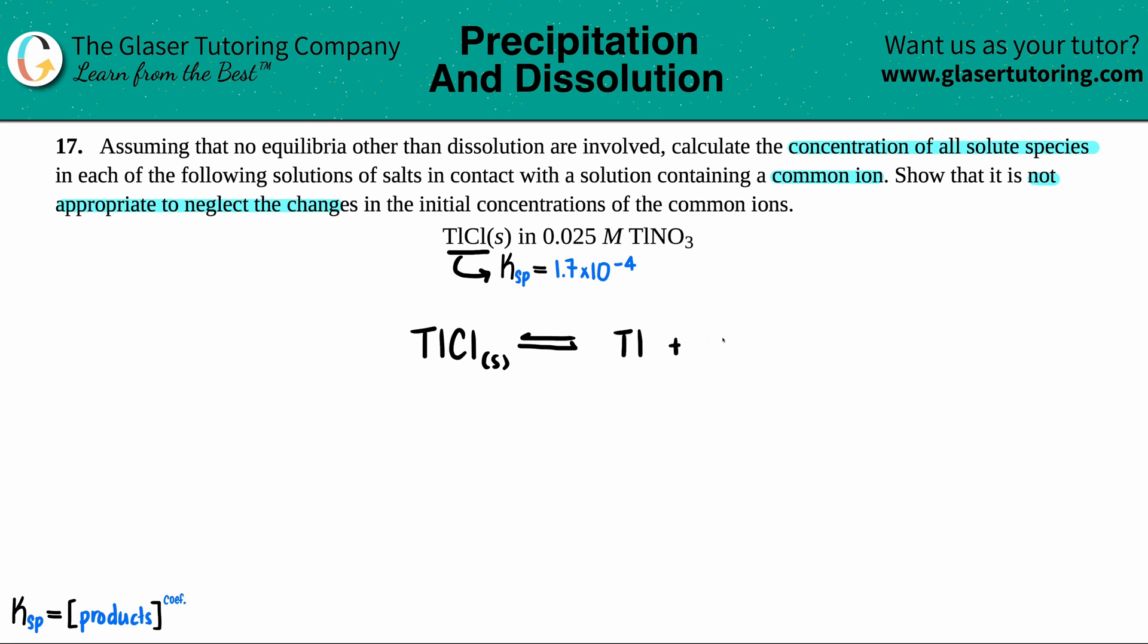So Tl⁺ plus Cl⁻. Let's get those charges. Seems like there's one chlorine for every one Tl, so Tl would be a +1 and Cl would be minus. They are charged so they're aqueous. I notice it's already balanced so we're good to go.